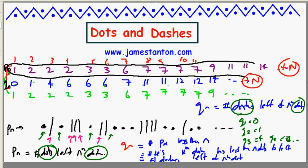The most beautiful thing of all is that the frequency sequence simply interchanges the words 'dashes' and 'dots.' If the original sequence is the number of dots to the left of the nth dash, the frequency sequence swaps dash for dot and dot for dash. Then the frequency sequence of the frequency sequence just interchanges those words back again — so the frequency of the frequency sequence must be back to the original sequence.